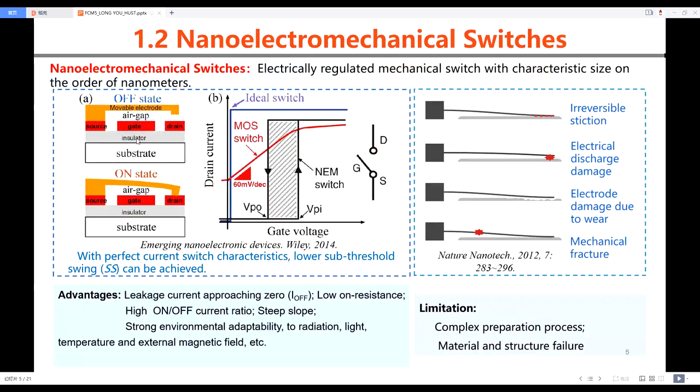NEM switch is an electrically regulated mechanical switch with characteristic size on the order of nanometers. It has an abrupt on-off transition process and thus can achieve ultra-low sub-threshold swing. In addition, in principle, it possesses zero leakage current and high on-off ratio.